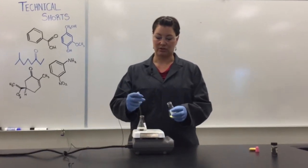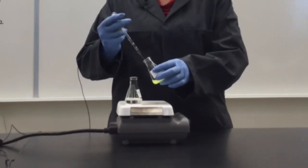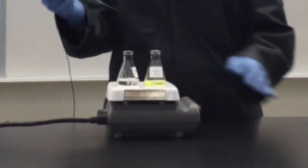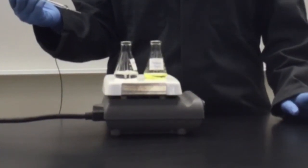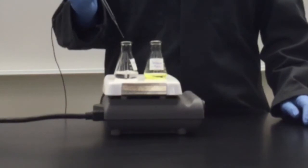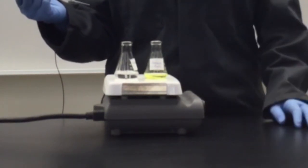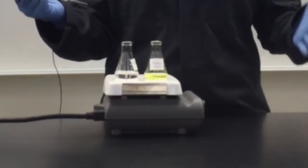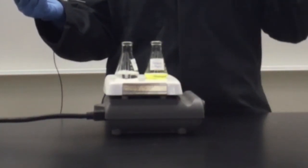So what I'm going to do to start is add a few portions of hot boiling solvent to my solid and ensure that it comes back up to a boil on my hot plate. And then I will continue to add hot solvent until everything has dissolved and I have a transparent solution.